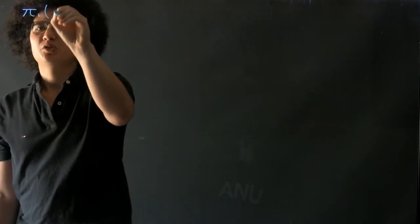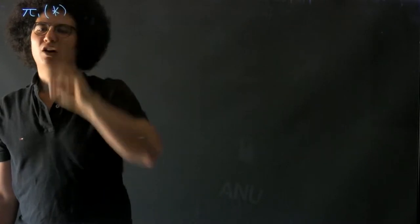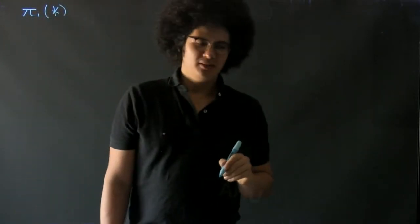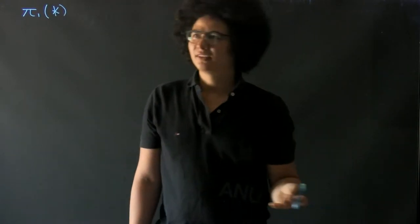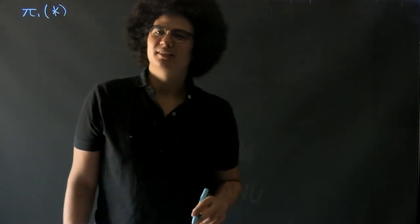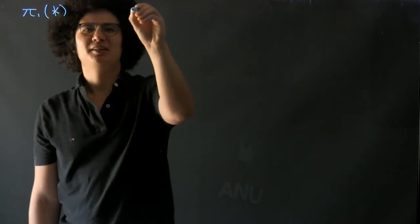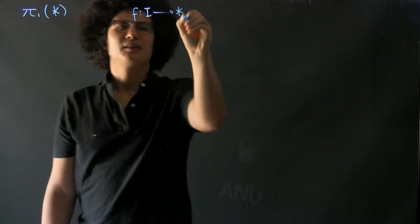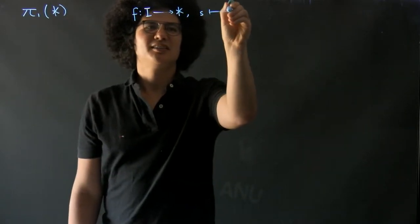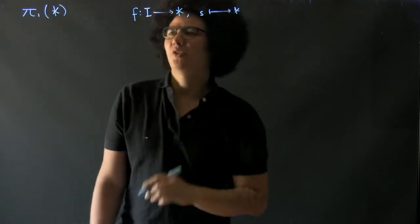First, we want to find the fundamental group of a point. Well, the fundamental group consists of homotopy classes of loops, but there's only one loop in a point. In fact, there's only one path in a point, and that's the path that just sends everything to the point.